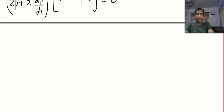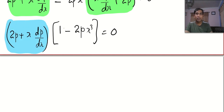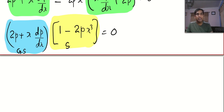Now comes the next critical step. Whenever you factorize, you will normally be left with two factors. Listen very carefully: in one of the factors you will see dp/dx, and that factor gives you the general solution. This factor is normally variable separable in most exam problems, but it can also be linear or homogeneous. The factor with no dp/dx gives something called the singular solution.